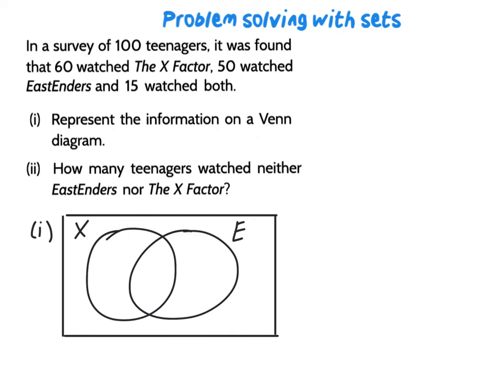Okay, 15 people watched both so 15 will go in our intersection because it's common to both. Now of that 15, of the 60 people that watched X factor, 15 of them watched EastEnders. So we actually need to say 60 take away 15 will give me the amount that watched X factor. So 45 watched X factor.